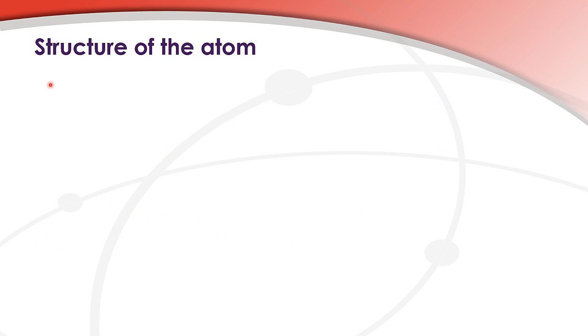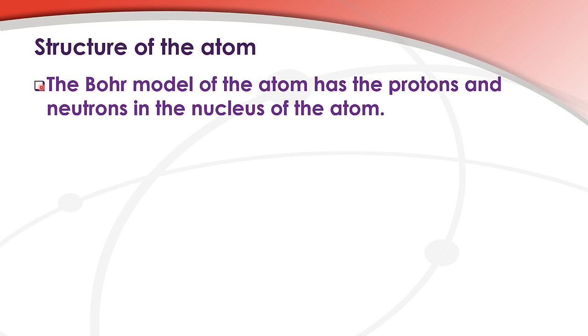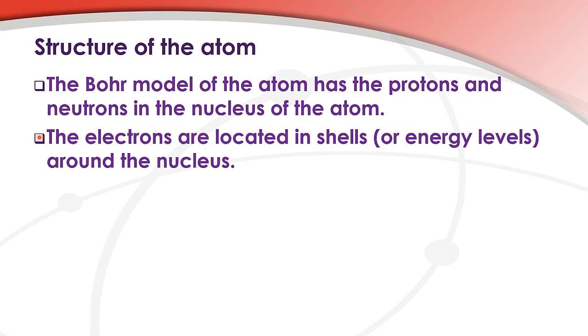Next we look at the structure of the atom. The Bohr model of the atom has the protons and neutrons in the nucleus of the atom. The electrons are located in shells, or energy levels, around the nucleus.